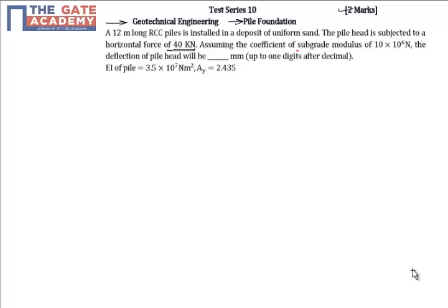Assuming the coefficient of subgrade modulus as 10×10^6 N, the deflection of the pile head is to be calculated in mm. It is given that EI of pile is 3.5×10^7 Nm^2 and Ay is 2.435.